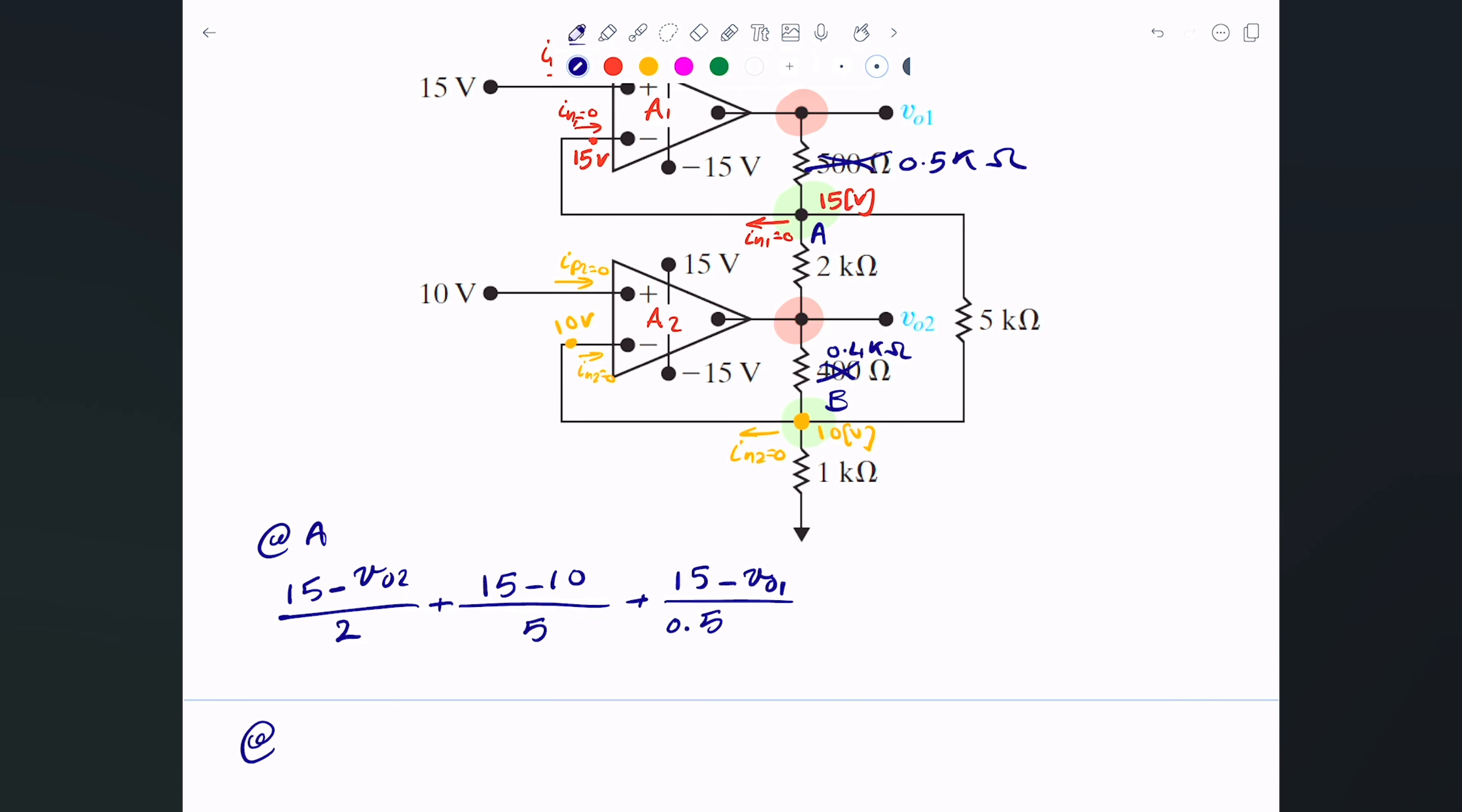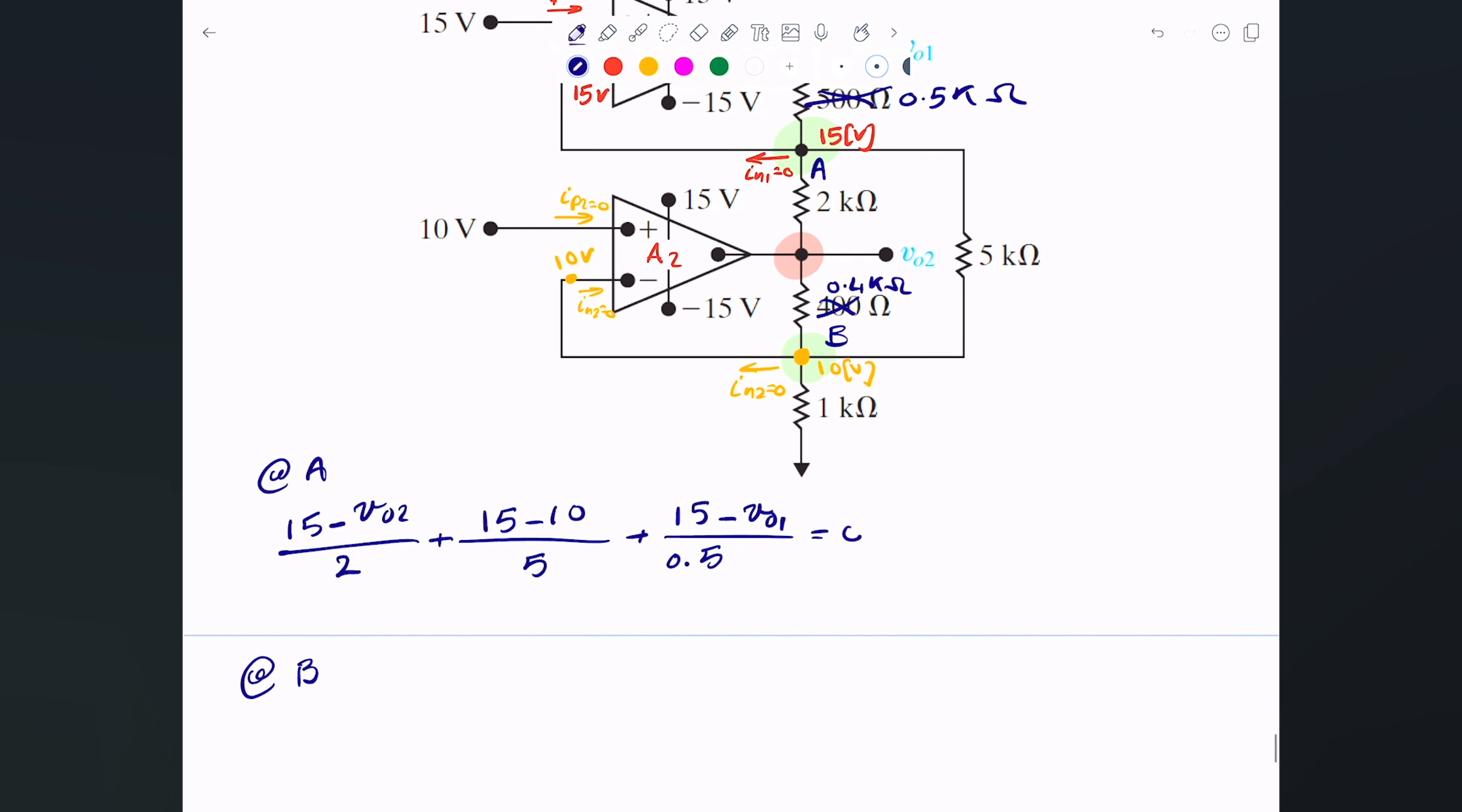Let's do the same type of analysis for point B. At point B, this has to equal zero. Point B is here, and this current is zero, so I don't have to worry about it. Let's take a look at the current down. This one here becomes 10 divided by 1 plus the current going from here all the way to here. That will be 10 minus 15 divided by the 5 kilo ohm. This is basically the opposite of this guy here.